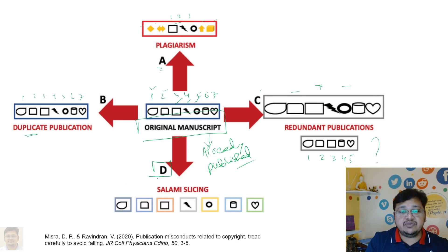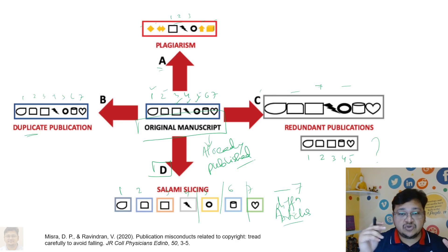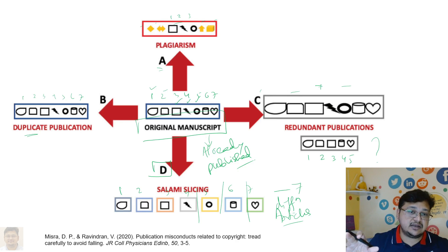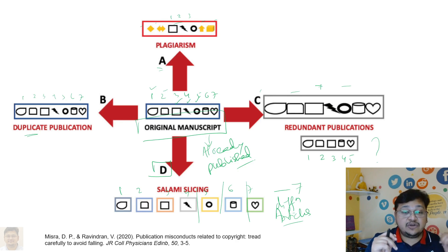Another category, category D, is salami slicing. Basically, the work is being sliced into seven different parts so that seven different articles can be published, in order to increase the publication count. These are different types of research misconduct — unethical behavior in the research and publication field — and they are to be avoided.